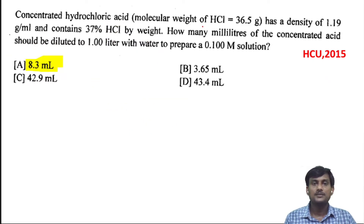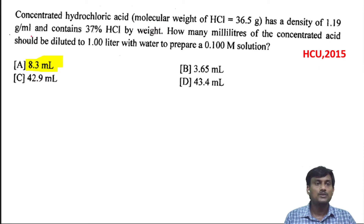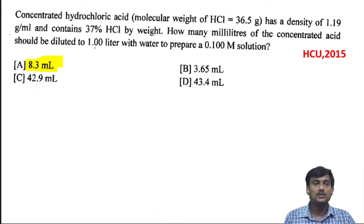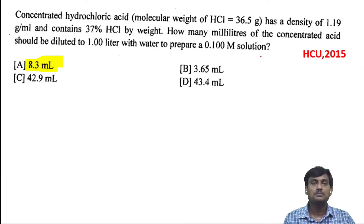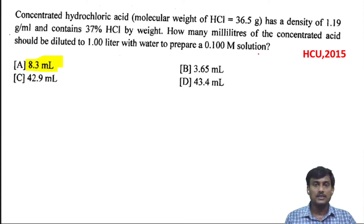Concentrated hydrochloric acid — molecular weight is given — has a density of 1.19 gram per ml and contains 37% HCl. How many milliliters of the concentrated acid should be diluted to 1 liter with water to prepare a 0.100 M solution? Here, before dilution, we have to calculate the concentration of HCl. The density of HCl solution is 1.19 gram per ml.